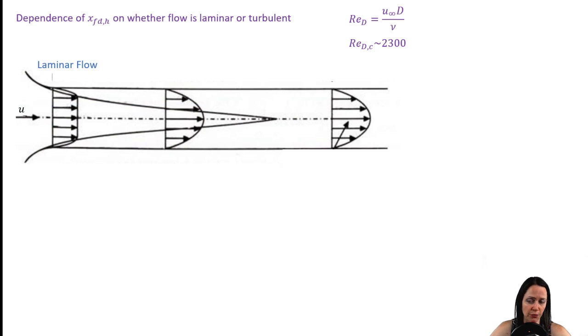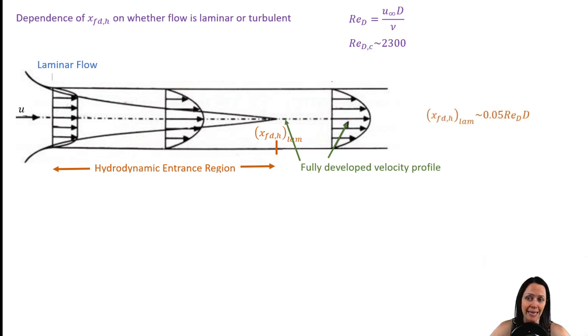Let's look at the hydrodynamic entry length for laminar flow. You can see that the hydrodynamic entrance length is indicated here where the inviscid region has disappeared. After that entrance region, there's no change in the velocity profile with respect to x. If the Reynolds number is less than 2300, the hydrodynamic entrance length is approximately 1/20th of the Reynolds number times the diameter.